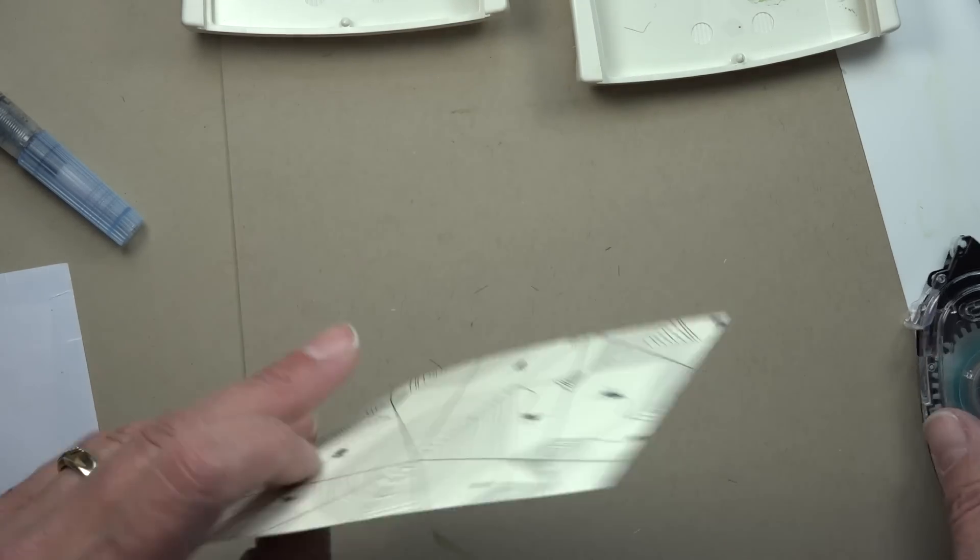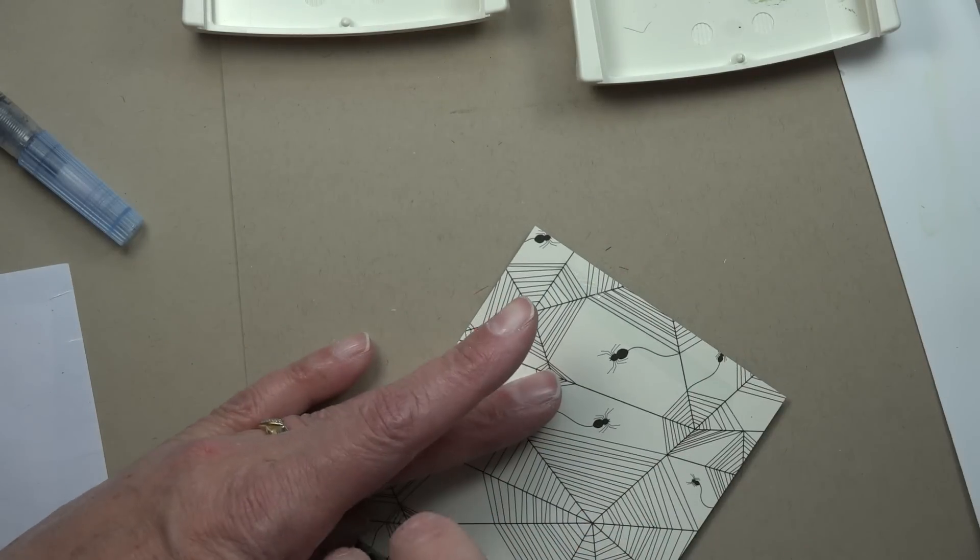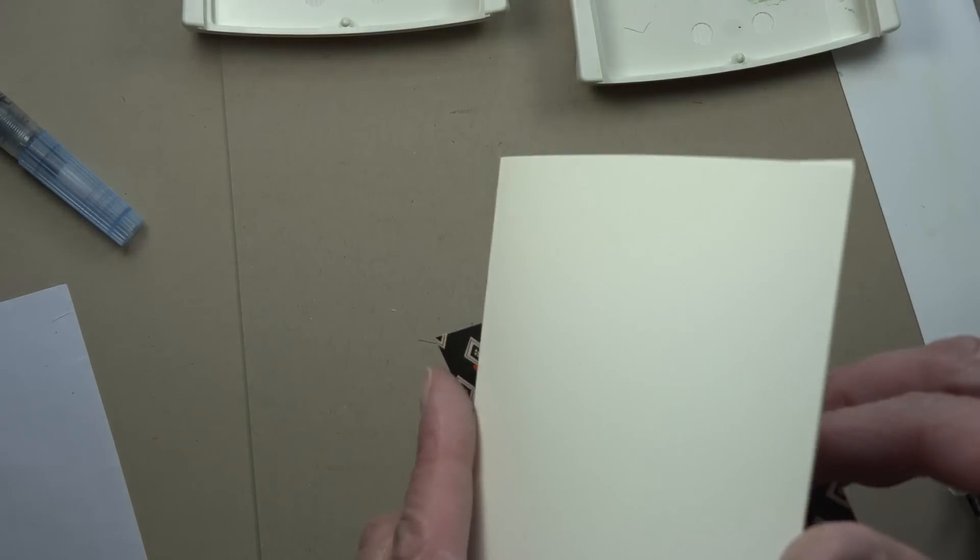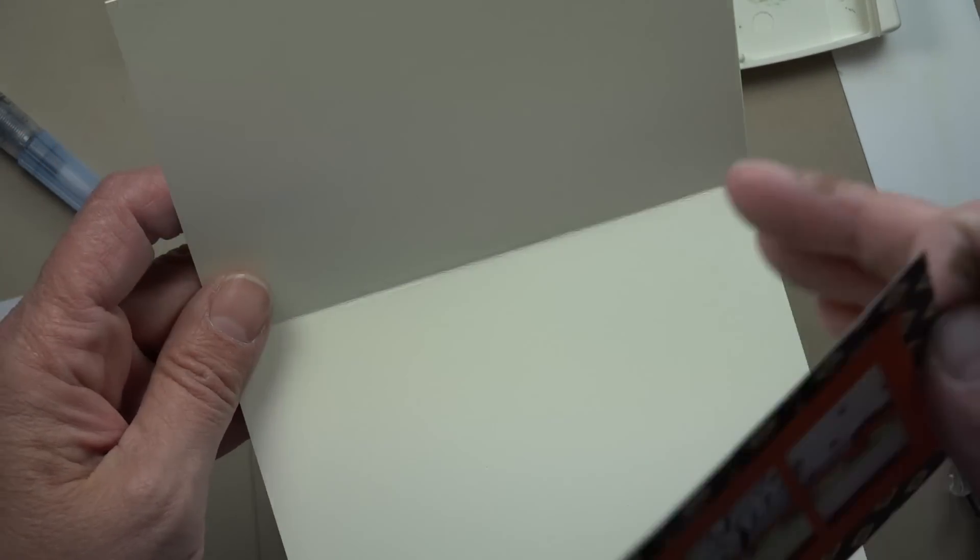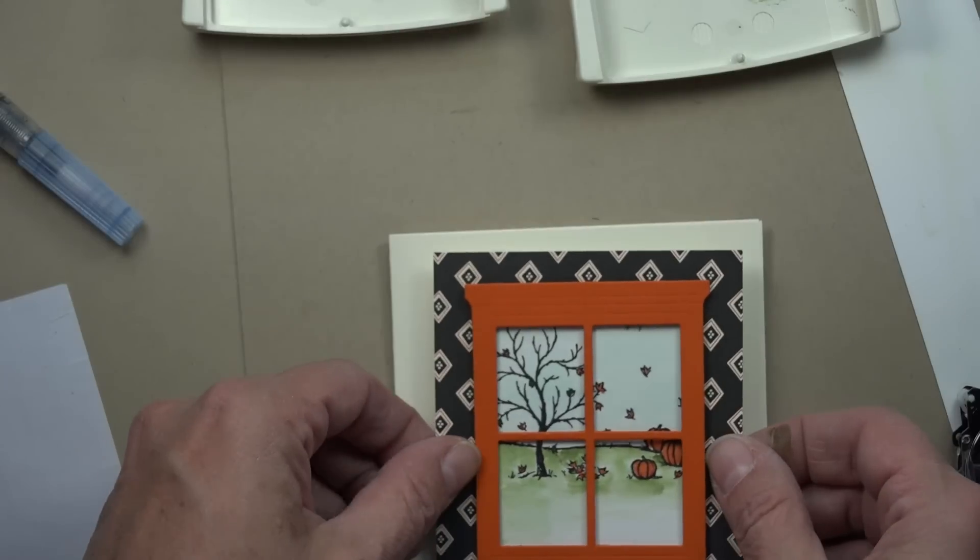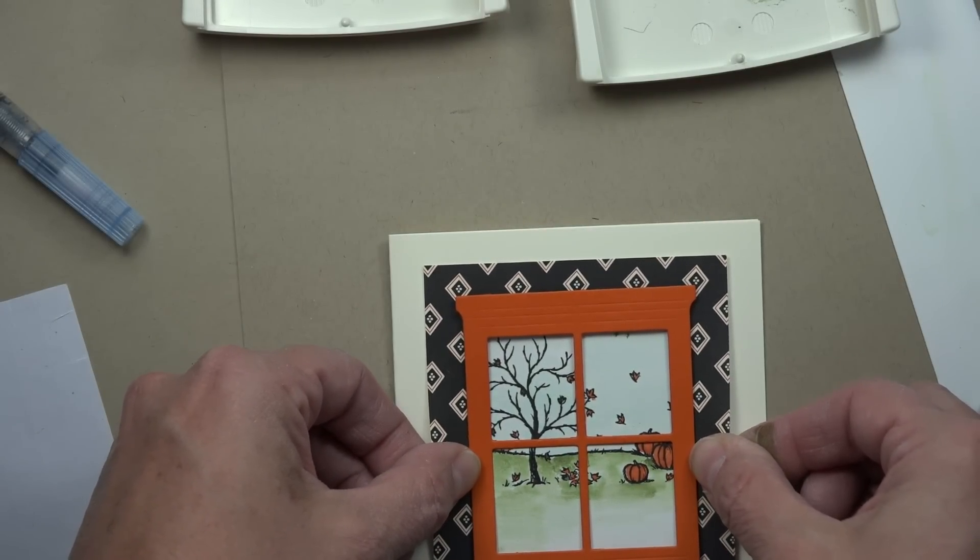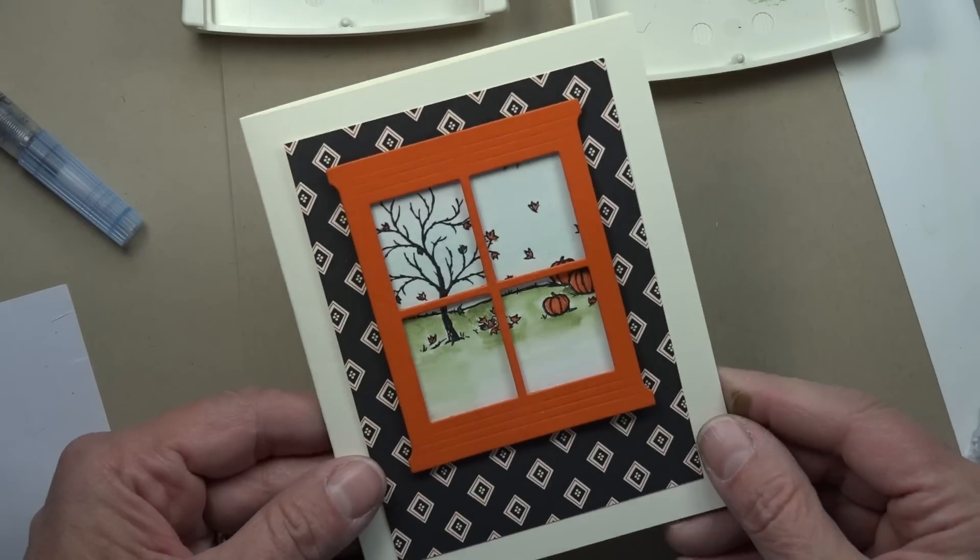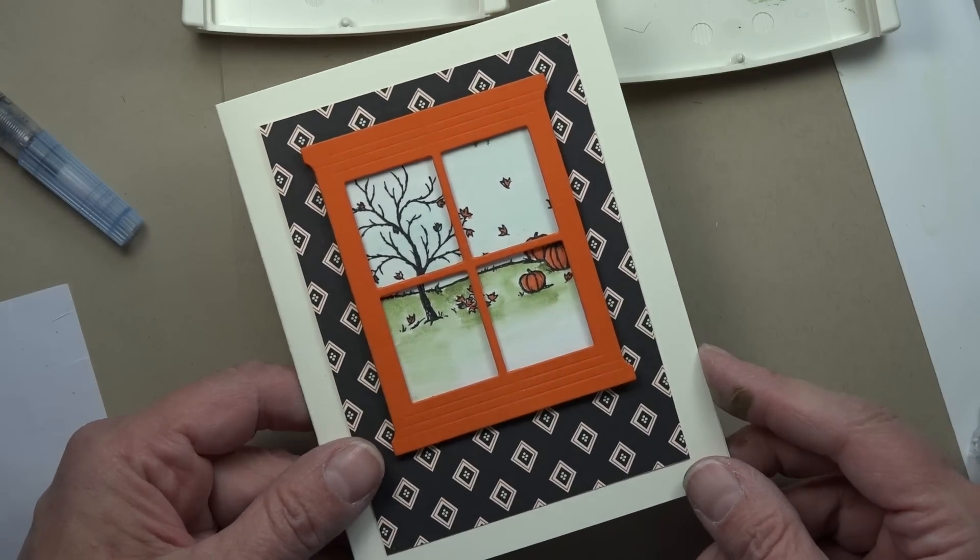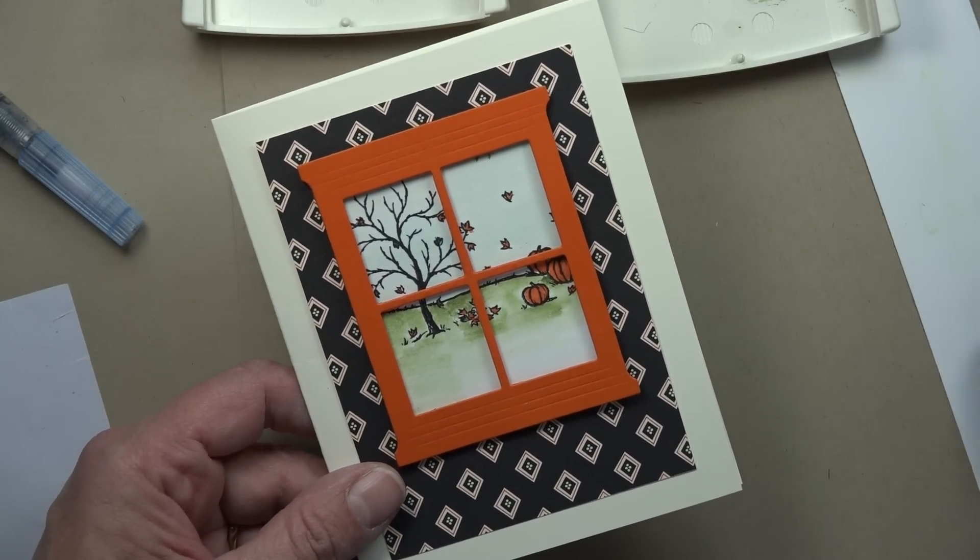And then this is going to get attached. I used a very vanilla card base so I used a half a sheet of very vanilla, cut it five and a half, scored it four and a quarter and folded and that gives me my card base. I can just attach that right down to my piece of card stock and my card is complete. So just a really fun and easy way to use the stamp set and that framelets together.